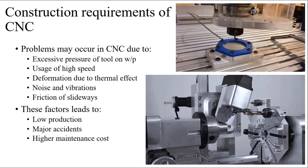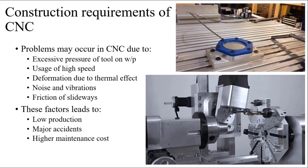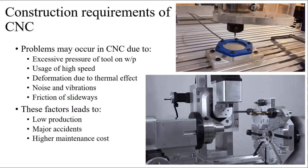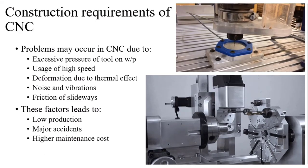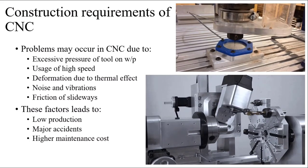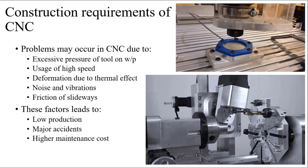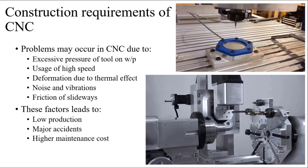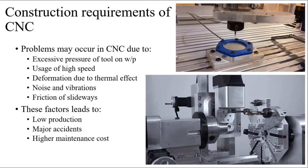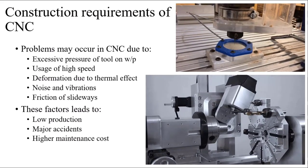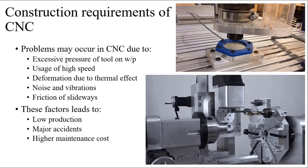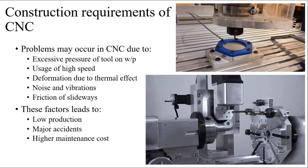So firstly, what are the constructional requirements? Whenever you design a CNC, you need a minimum value that should be included in the CNC machine. Problems may occur in CNC when you are operating it above its limit. The first problem is the excessive pressure of the tool on the workpiece. This is quite a big problem because inside a closed-door CNC, you can't see how the machine is reacting to your feed and depth of cut. So we provide maximum feed and depth of cut, and that creates excessive pressure on the tool.